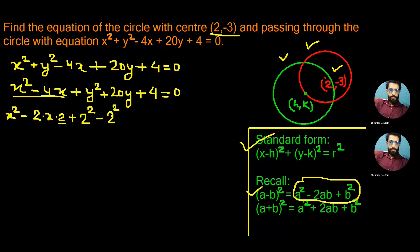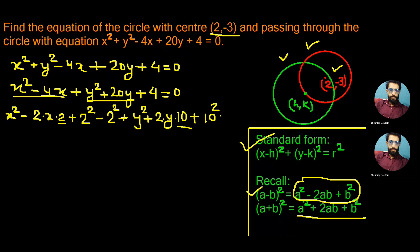We follow a similar technique with y² + 20y, which can be written as y² + 2·y·10. Comparing with the formula a² + 2ab + b², this 10 is in place of b. So we add 10² and to balance we also write -10².